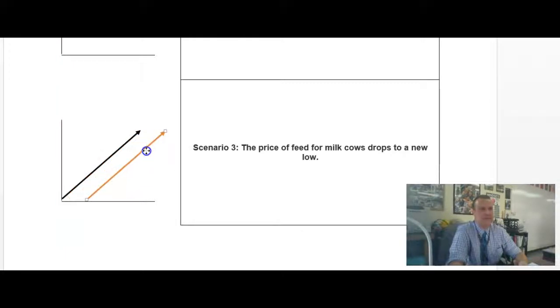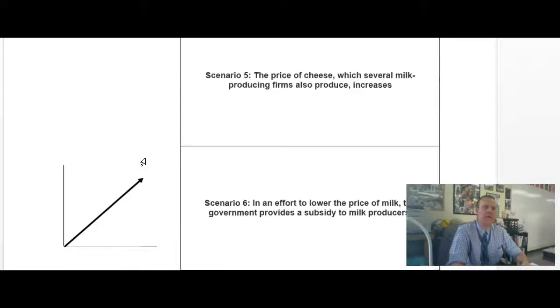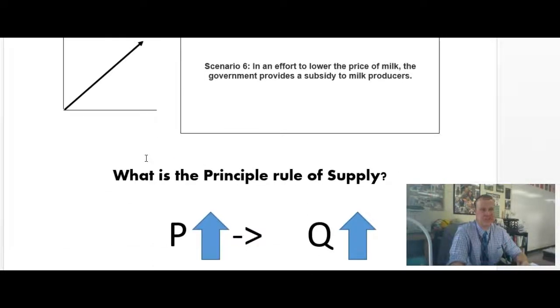So if we look at that, the orange line then would become the new one. S1 or however you want to label it would be that way and it's shifting to the right. So we know that. Let's go down and let's look at another one. Excellent. Let's do six here. Scenario six.